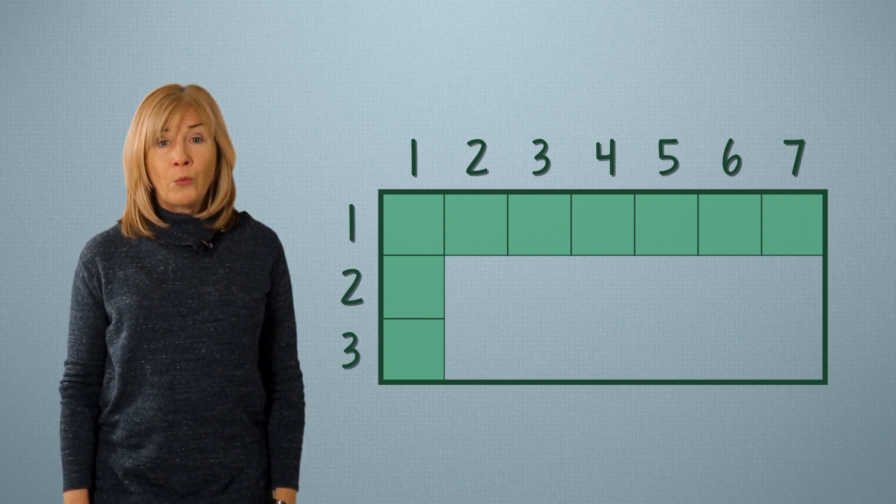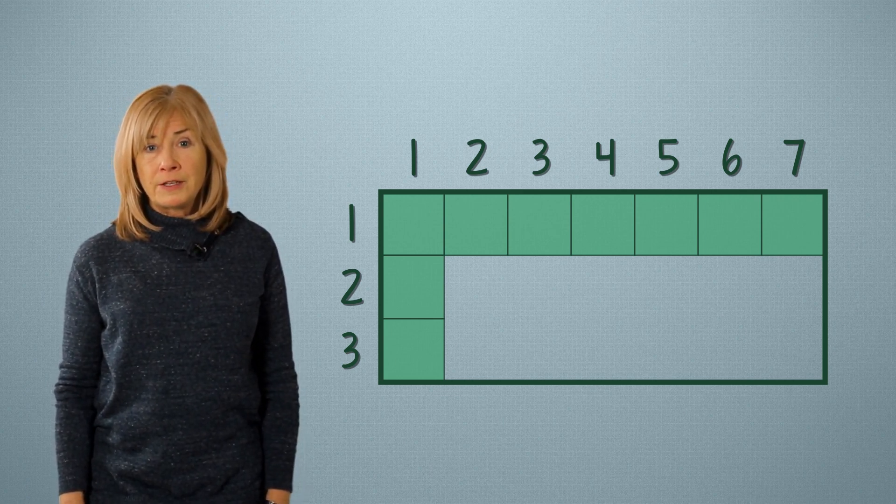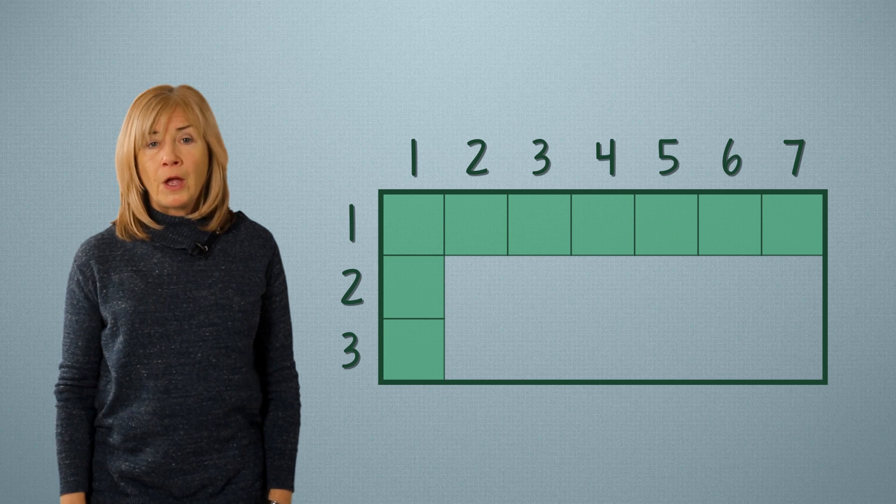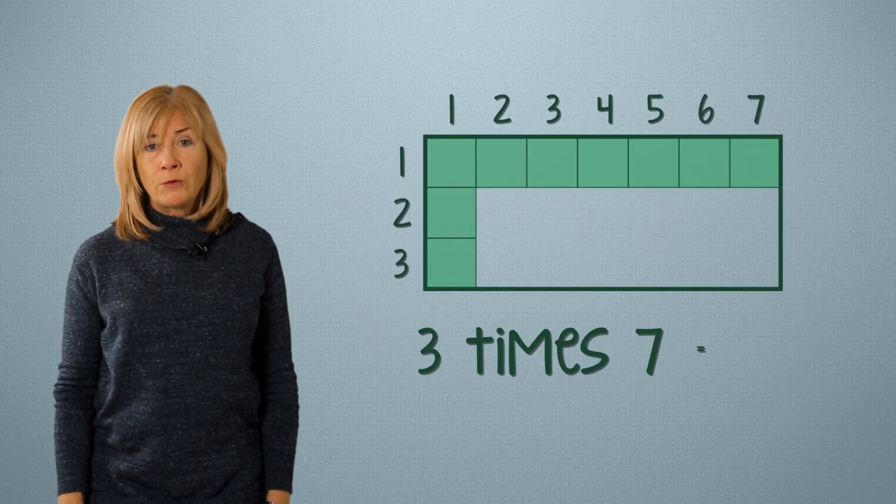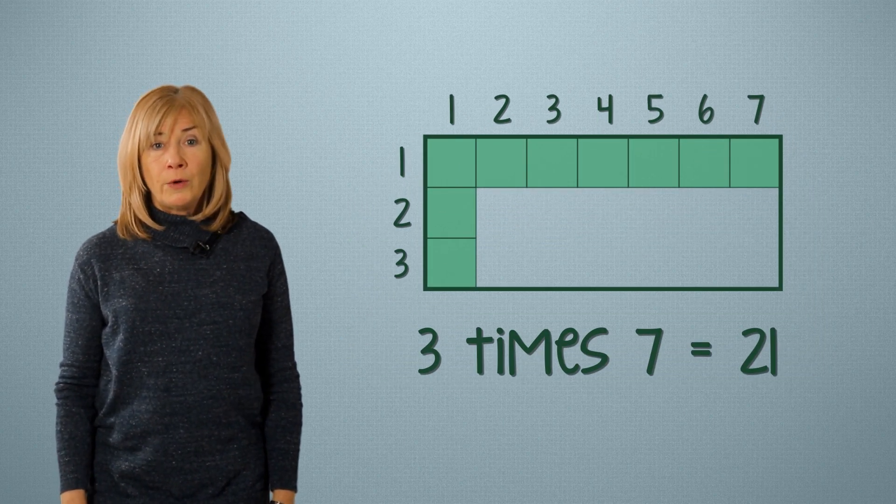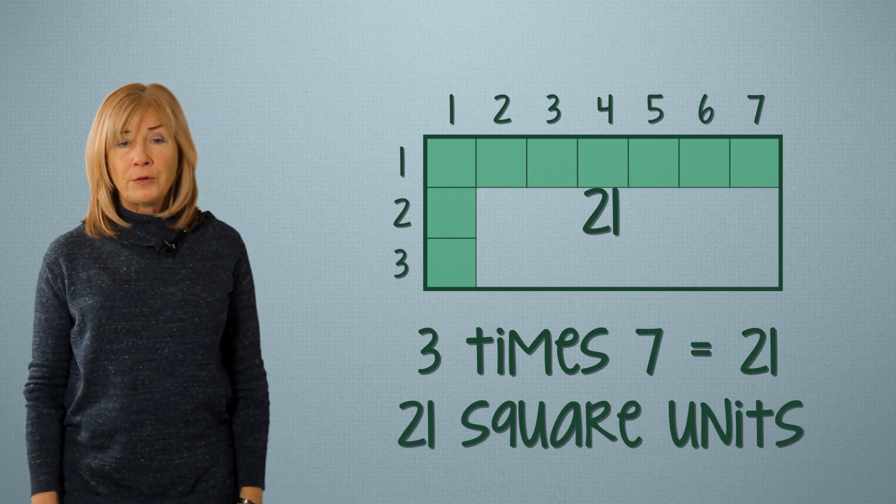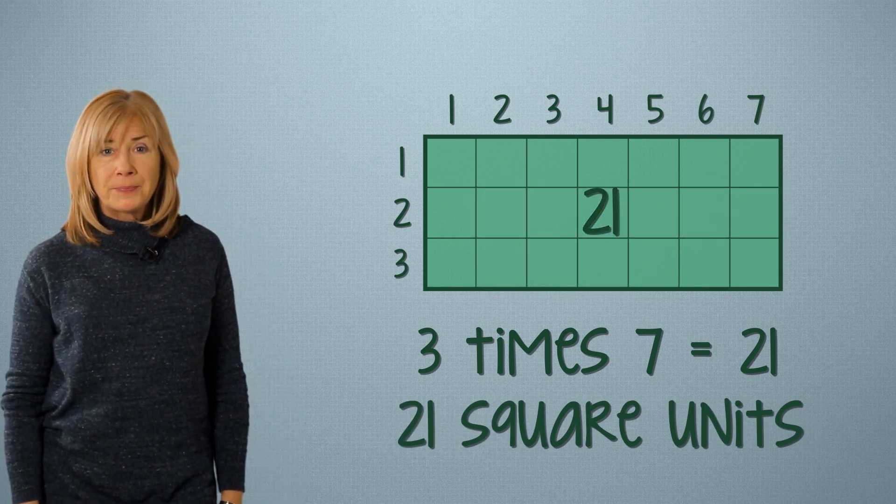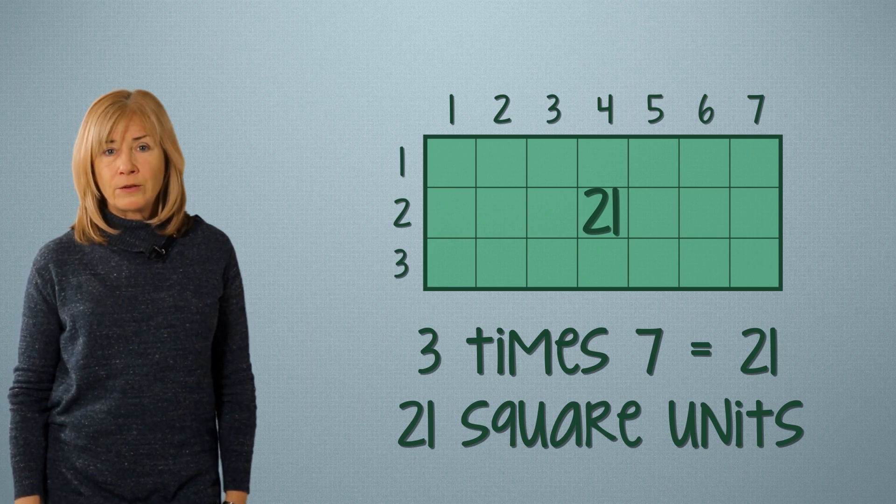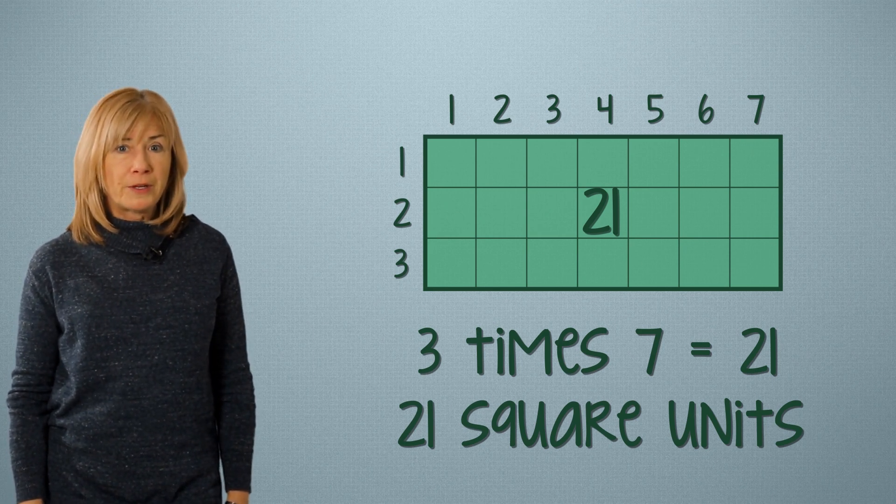To find the area, we multiply the length of the sides together. 3 times 7 equals 21. We have 21 square units. And look at this. That checks out. 21 square units.